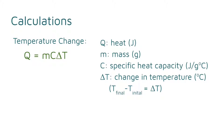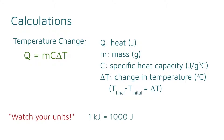Delta T is the change in temperature. You find this by taking the final temperature and subtracting the initial temperature of the substance. Be careful with your units — sometimes specific heat may be given in kilojoules instead, which would lead your calculated heat to have kilojoule units.